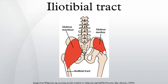Iliotibial band syndrome is a common thigh injury generally associated with running. It can also be caused by cycling or hiking. The onset of iliotibial band syndrome most commonly occurs in cases of overuse. The iliotibial band itself becomes inflamed in response to repeated rubbing on the outside of the knee, or swelling of the bursa between the bone and the tendon on the side of the knee.